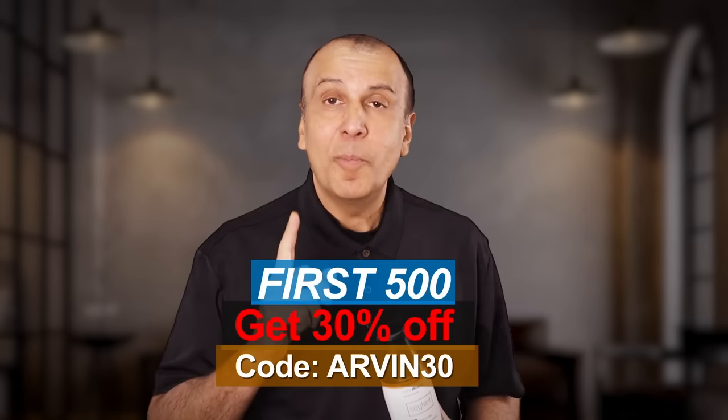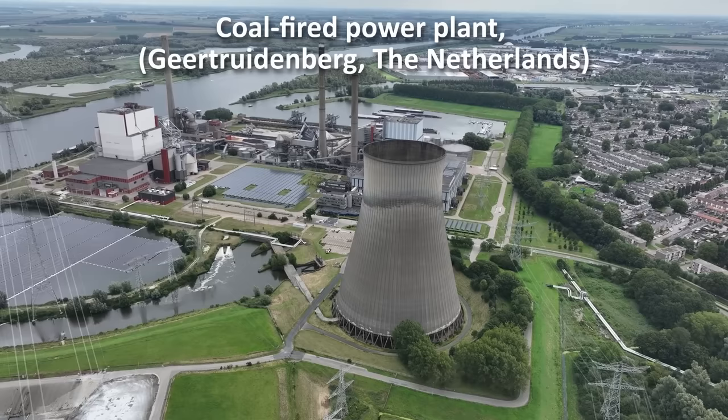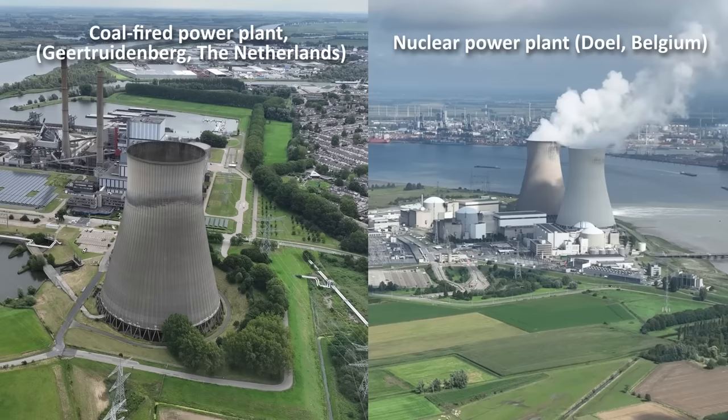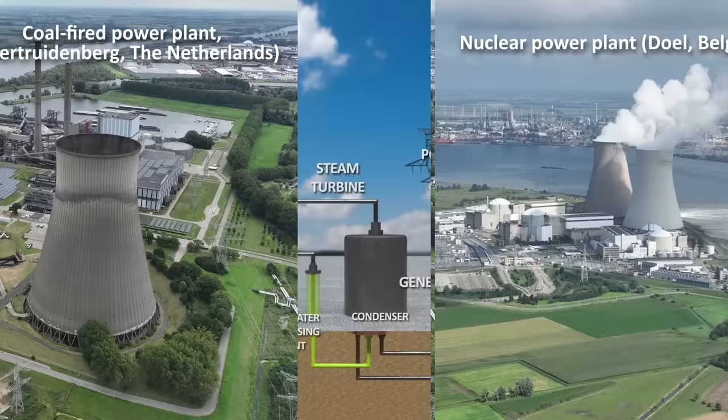And now, back to nuclear. To really understand how a molten salt nuclear reactor works, it's important to take a step back and look at how a power plant works in general. Not just a nuclear power plant because the essential schematics is really the same. The only difference is where the power comes from to produce the heat.